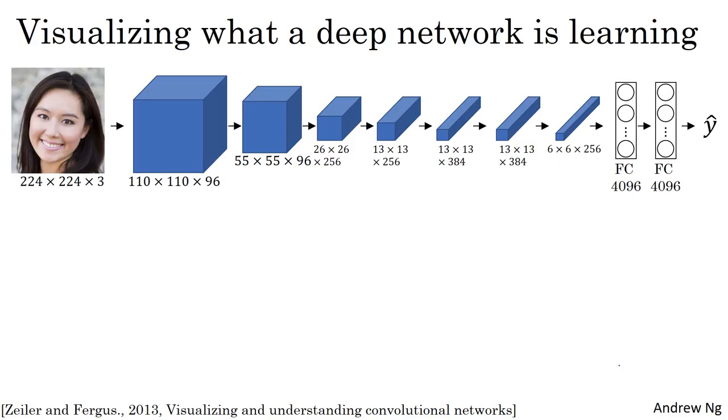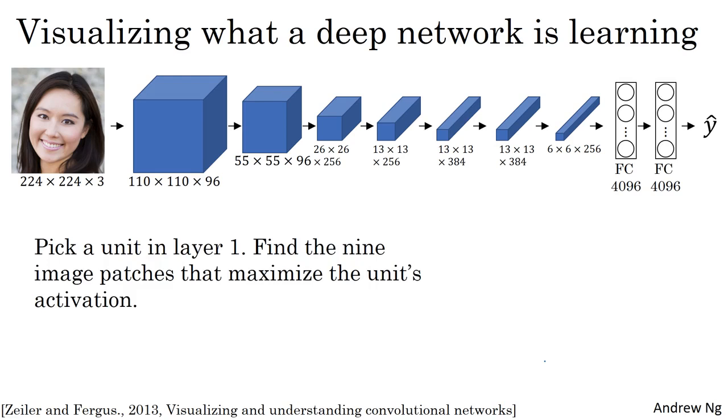Let's say you've trained a ConvNet. This is an AlexNet-like network and you want to visualize what the hidden units in different layers are computing. Here's what you can do. Let's start with a hidden unit in layer one. And suppose you scan through your training set and find out what are the images or what are the image patches that maximize that unit's activation.